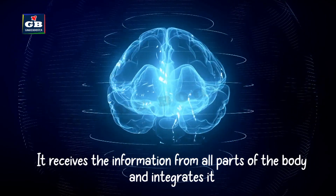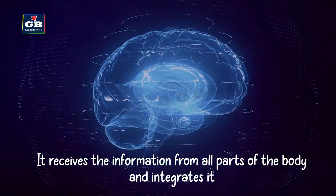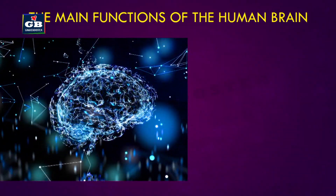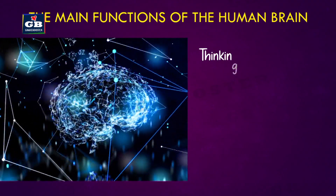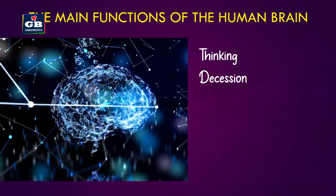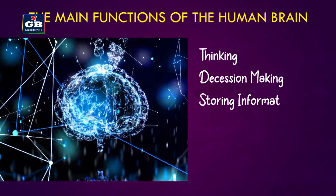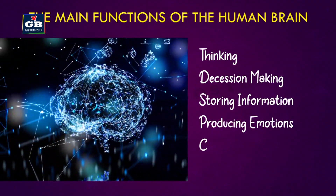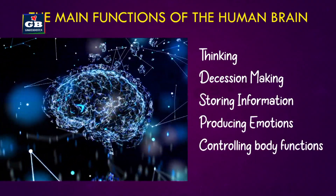The main functions of our brain are thinking, decision making, storing information, producing emotions, and controlling body functions.